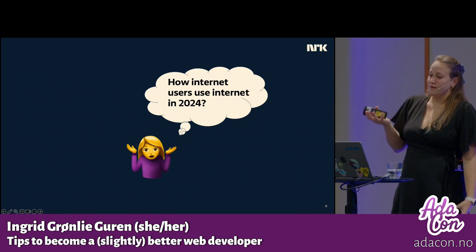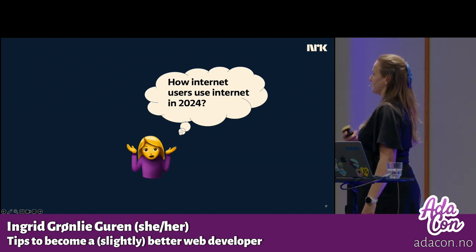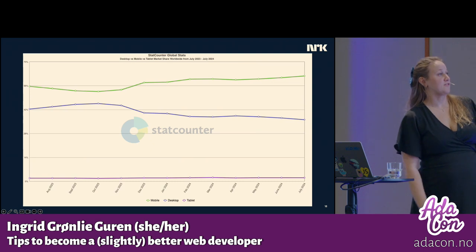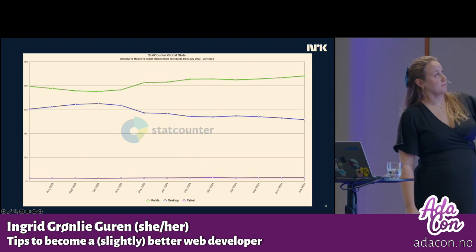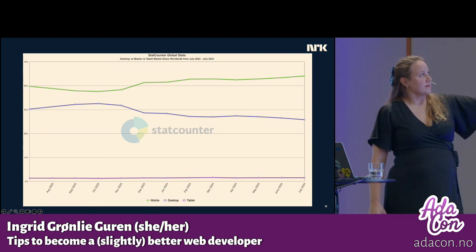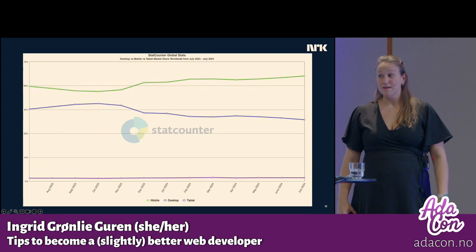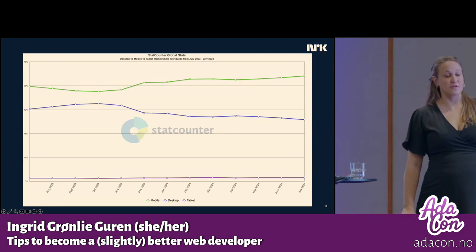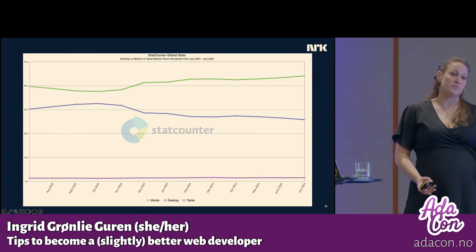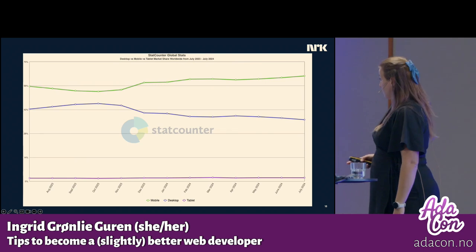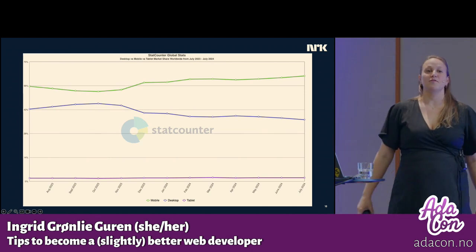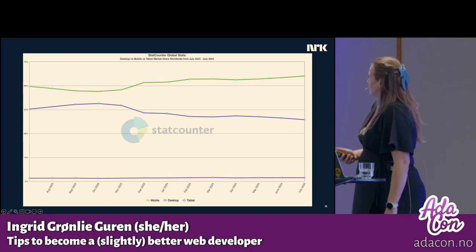There are several things worth considering here, because many of our users use technology different from us developers. This is global statistics from StatCounter for the last year, showing how users split between mobile, desktop, and tablet. Tablet: not so many, not growing, not declining. Desktop has been declining for the past few years, still declining. Mobile is at about 60% of users. This is quite similar to our traffic at NRK — we usually say 70% on mobile and 30% on desktop, but recently we've started saying 80% on mobile. That means that if you make an incredible desktop experience, almost no one will see it.